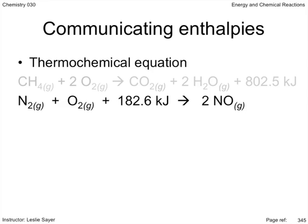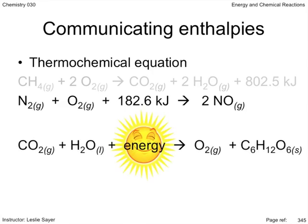The endothermic reaction for the formation of nitrogen monoxide is shown here, indicating that energy is required for the reaction, and so it is expressed in the thermochemical equation as a reactant. Again, we did a similar thing before for photosynthesis. Energy from the sun is required for this reaction to proceed, and so is included in the equation on the reactant side.